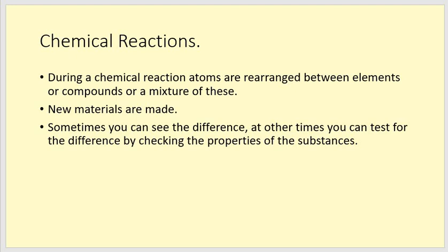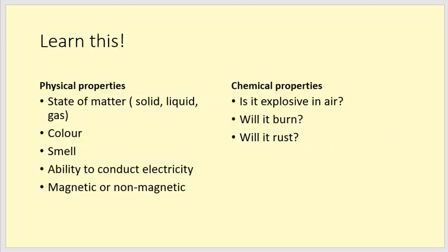Okay, so here are the features of a chemical reaction. During a chemical reaction, atoms are rearranged between elements or compounds or a mixture of those. So, what you have at the beginning and what you have at the end are not the same. You make new materials. Sometimes you can see the difference. It can be observed. At other times, you have to test for the difference by checking the properties of the substances. You will probably want to write these three points down because you will need to know them. Have I mentioned we'll have a quiz on Friday this week? Oh, I think I just did.